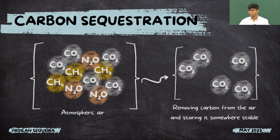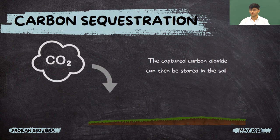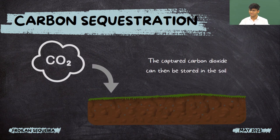The first step for carbon sequestration is removing the carbon dioxide. Then it is transported and injected back into the soil. Under the right conditions, the captured carbon dioxide can be stored in the soil.